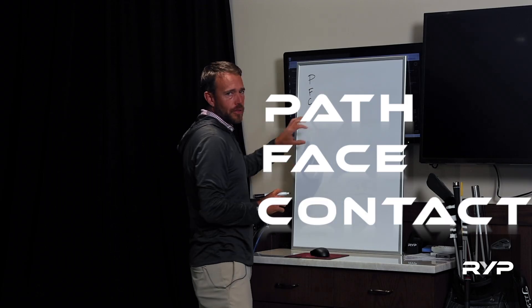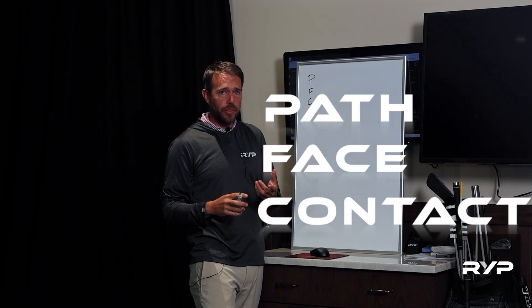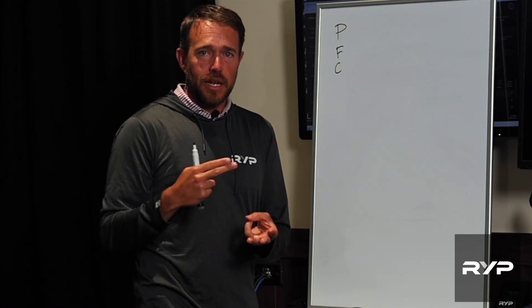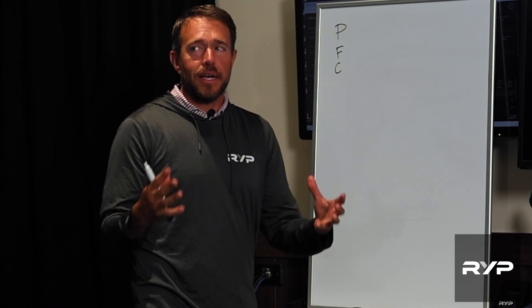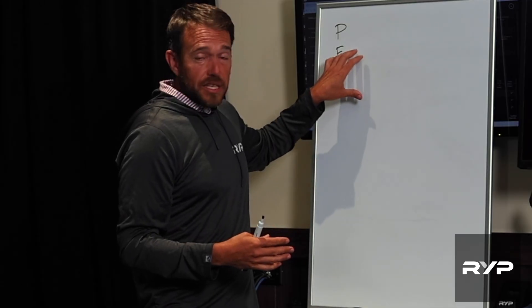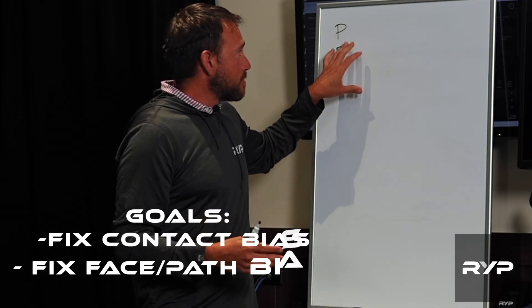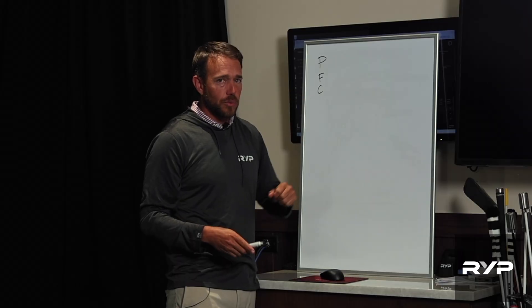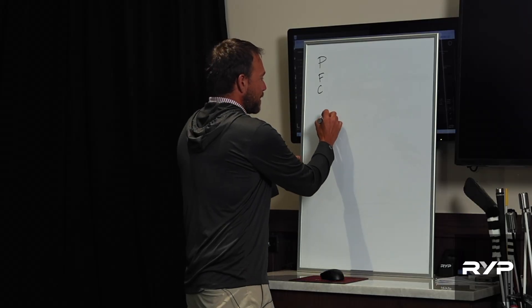Those are going to be the three headings. We're going to master all three of these concepts, and with this we're going to fix every shank, every toe shot, every top in terms of biases. We're also going to fix face bias — which is when we miss right or left — and we're going to fix path, which is the curve of the shot. So I'm going to go through these one by one. Contact is basically...